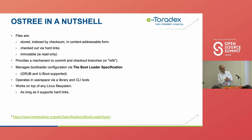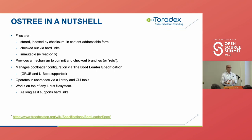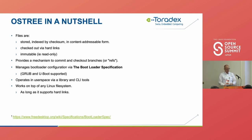A bit more detail: all files — or as OSTree calls them, objects — are stored indexed by their checksum. The system takes the checksum of the file and uses it to generate a file name in a directory structure so you don't have all files in one directory. They are then checked out via hard links. When you have a bootable file system tree, each file in that tree is a hard link to the appropriate object in the repository. What OSTree calls a hard link farm is generated to reference one specific release.